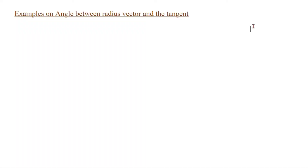Hi, I am Syedhan Mass online. Today we will take up a few problems on angle between the radius vector and the tangent. In the previous video I already derived the formula for angle between the radius vector and tangent. The formula we obtained is tan phi equals r times dθ/dr.